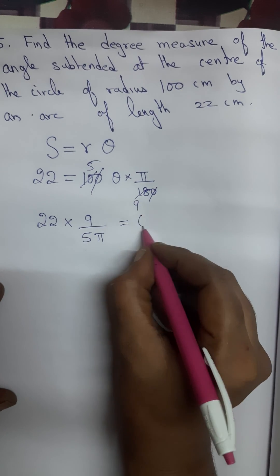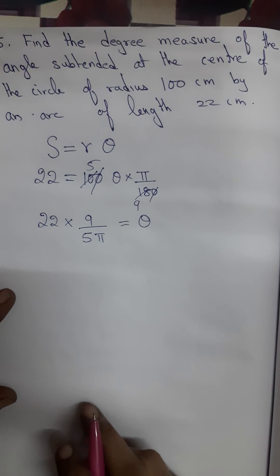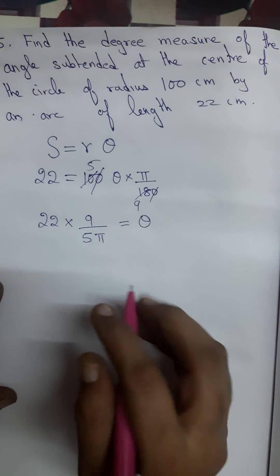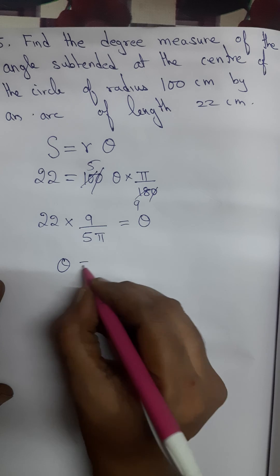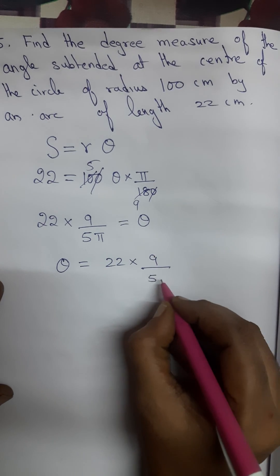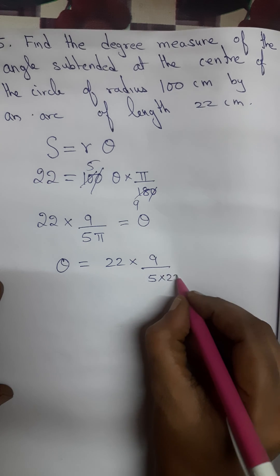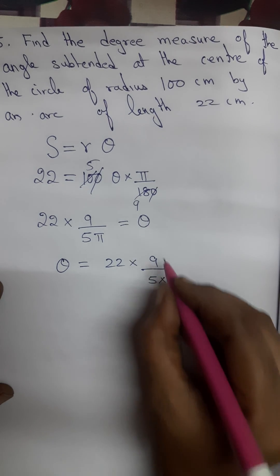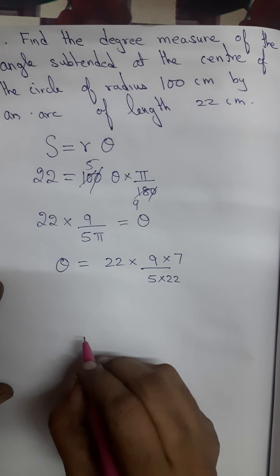I am keeping in the right hand side only theta. I have to simplify and find out the answer for theta. Theta is equal to 22 into 9 by 5. Instead of pi, let me write 22 by 7. That 7, let me take to the numerator.